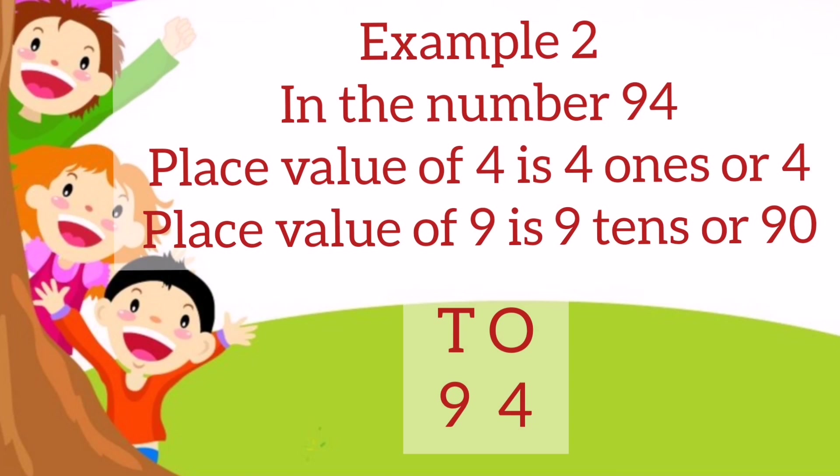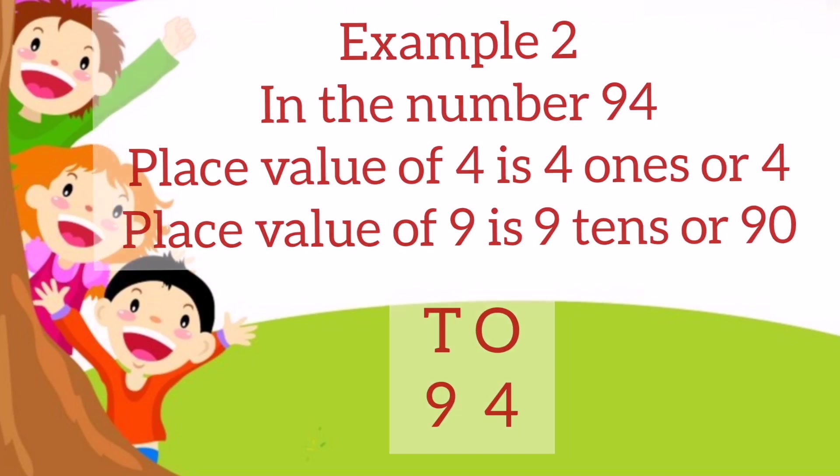Example 2. In the number 94, place value of 4 is 4 ones or 4 because 4 is in the ones place. Whereas place value of 9 is 9 tens or 90 because 9 is in the tens place.